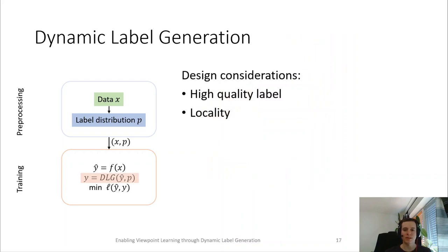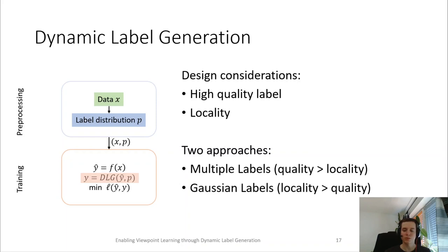When designing a dynamic label generation, we make two main considerations. First, we want to ensure that the selected label is of high quality. Second, to resolve the label ambiguity and make a consistent label decision, we want to enforce a locality in the label selection. For this, we present two different approaches.